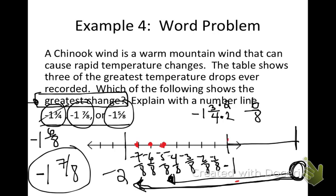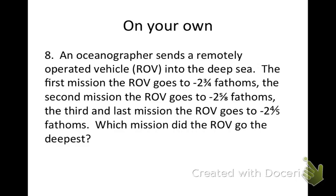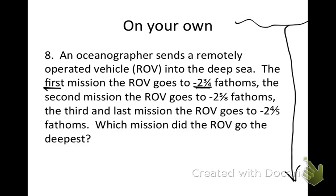Write this question in your notebook. An oceanographer is sending a remotely operated vehicle into the deep sea. The first mission goes to negative 2 and 3 fourths fathoms, the second to negative 2 and 5 eighths, and the third to negative 2 and 4 fifths. You need to find a common denominator among 4, 8, and 5. This is tricky — if you have trouble, we can go over it tomorrow, but try it. Put your answer in the text box on the right.